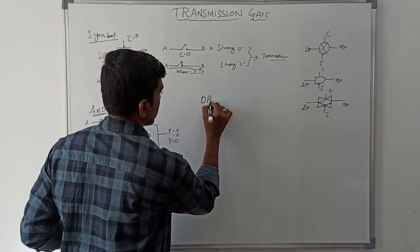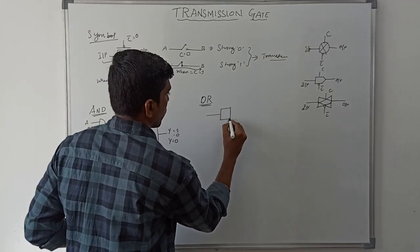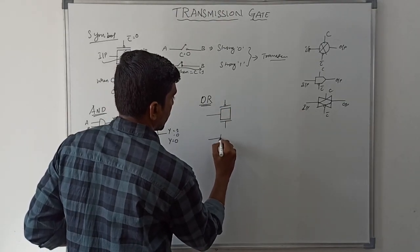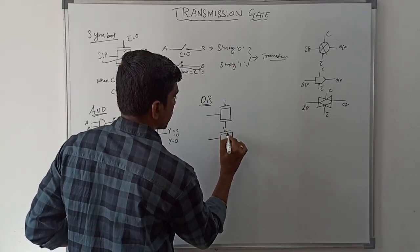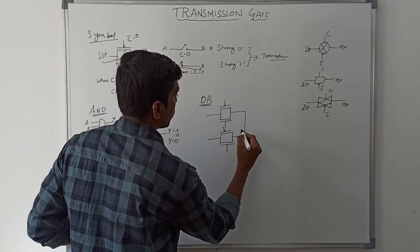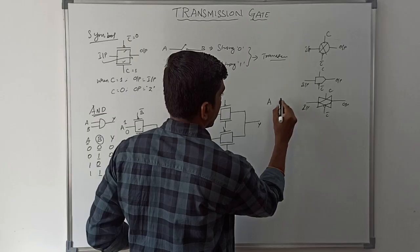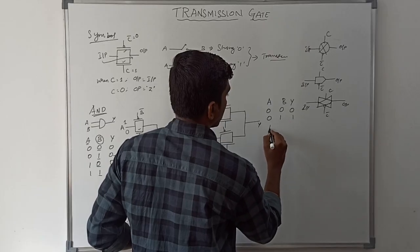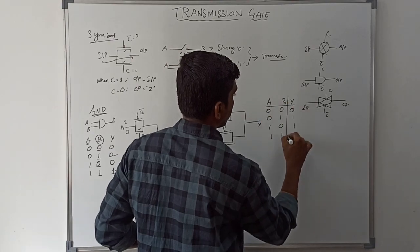Now I am going to design an OR gate. The OR gate also has two inputs. I am using two transmission gates, with the outputs shorted to get the final output. The truth table for OR gate is: 0,0→0; 0,1→1; 1,0→1; 1,1→1.